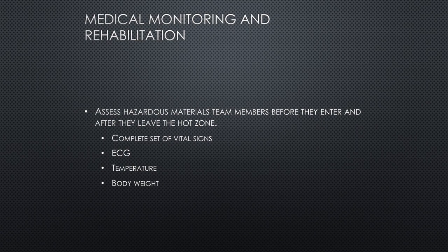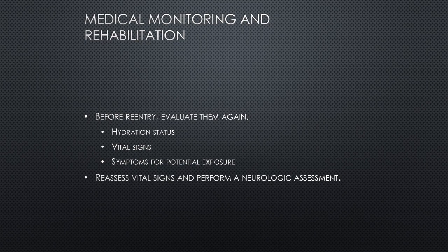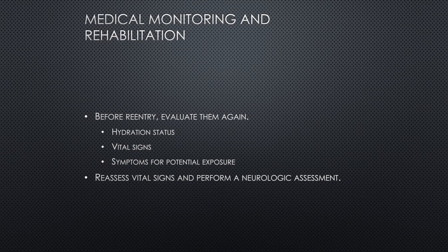Assess the hazmat team before they enter and after they leave the hot zone. Assessment should include a complete set of vital signs, EKG, temperature, and body weight. Team members should pre-hydrate with water or sports drink — a 50/50 Gatorade-water mix is ideal. Before re-entering the hot zone, evaluate hydration status, vital signs, and any symptoms of potential exposure. Team members should remove protective clothing and be given time to rest in an air-conditioned area. Loss of body weight correlates to loss of fluids and risk of dehydration and hypovolemia.